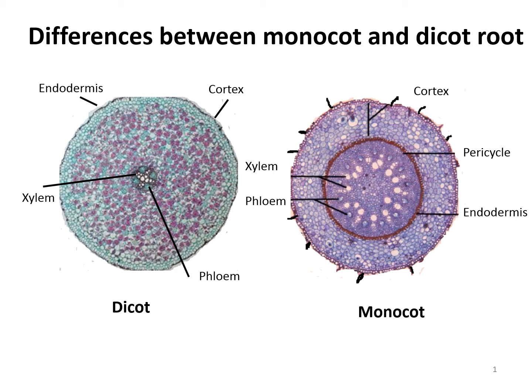Compared to dicot roots which have fewer xylem bundles, there are usually more than six polyarch xylem bundles in monocot roots. In dicot, the pericycle gives rise to cork cambium, parts of vascular cambium, and lateral roots, whereas in monocot it gives rise to lateral roots only.